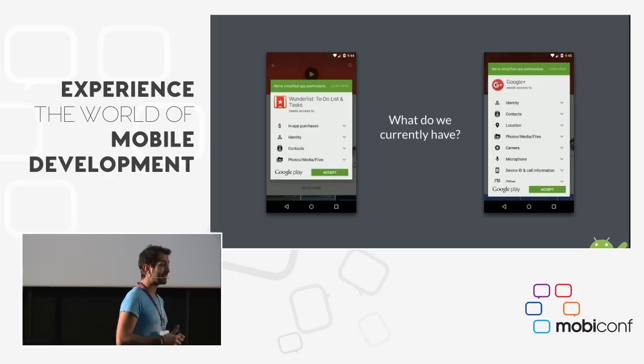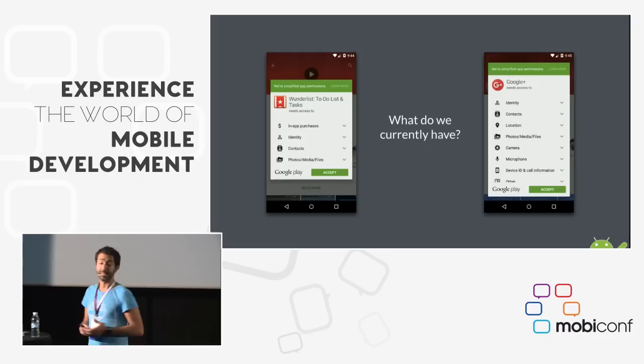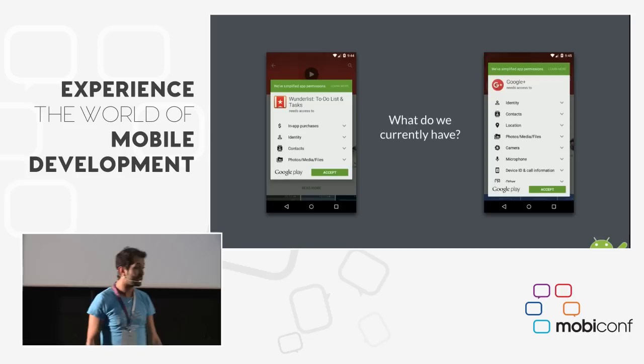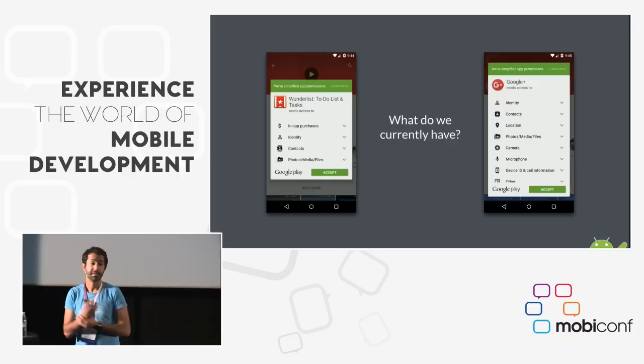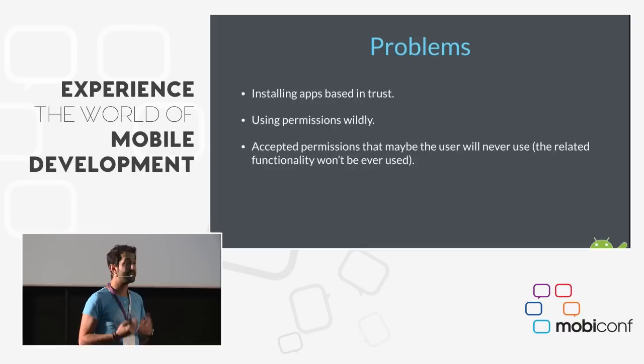What do we currently have in Android? When the user goes to the Play Store and tries to download an app, the first thing they see is a screen where they have to accept all the permissions the app is asking for. For instance, Wunderlist asks for in-app purchases, identity, contacts, and photos and media files. Google Plus asks for identity, contacts, location, photos and media files, camera, microphone — a lot of things. This is the first barrier the user finds, and some users probably won't download the app.